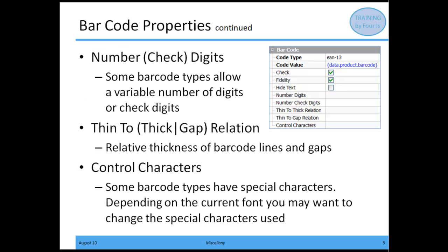The remaining five barcode properties are not always going to be used — they only need to be set for specific code types. For each property, the list is limited, so refer to the document page named element properties if you're going to be working with these. The first is the number of digits and the number of check digits. Some barcodes have variable digits, and for these you will probably need to set the number of digits or the number of check digits.